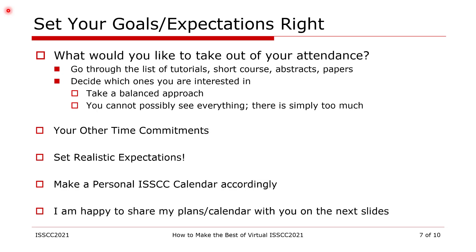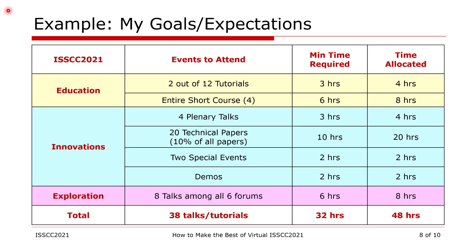To give you an example, I'm happy to share my own personal plans for attending ISCCC. Here's my initial wish list. In the education package, I would like to see two out of 12 tutorials and the entire short course. I'm also interested in all four plenary talks. Among the regular paper sessions, I'm interested in a subset of papers from Wireline, plus a few on analog circuits, targeting 20 regular papers. Among the forums, I'd like to see select talks on silicon photonics and electronics for quantum computing — eight talks across these two forums. The third column on this table shows the minimum time required to watch the tutorials, papers, and forum talks I have chosen.